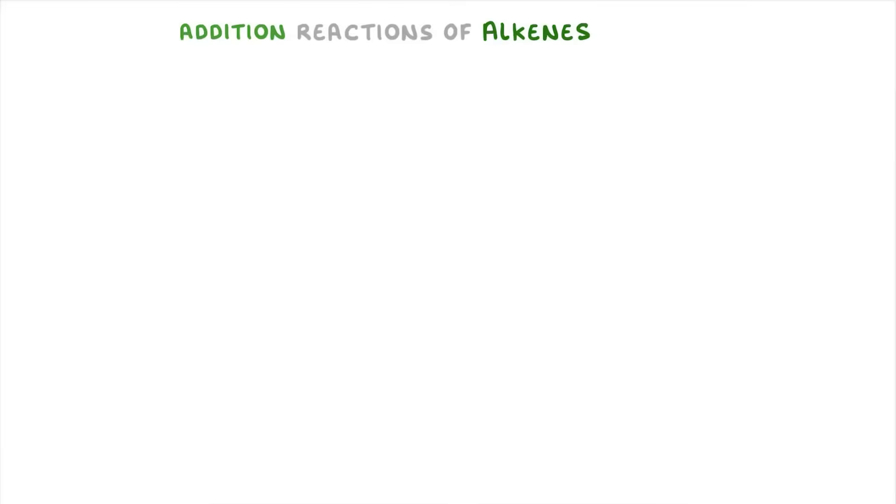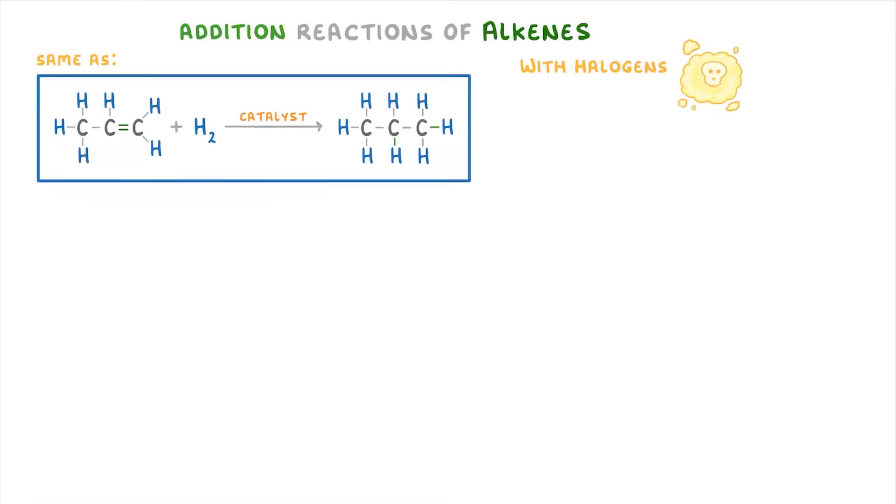The last example we need to cover is the reaction of alkenes with halogens. This is basically the same as the reaction with hydrogen that we saw earlier, but importantly it doesn't require any catalyst.